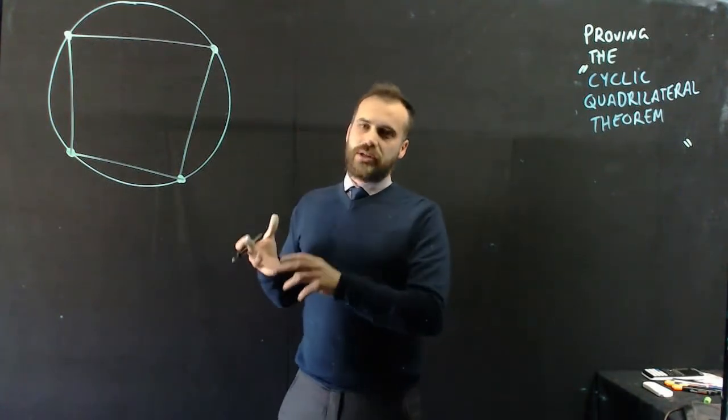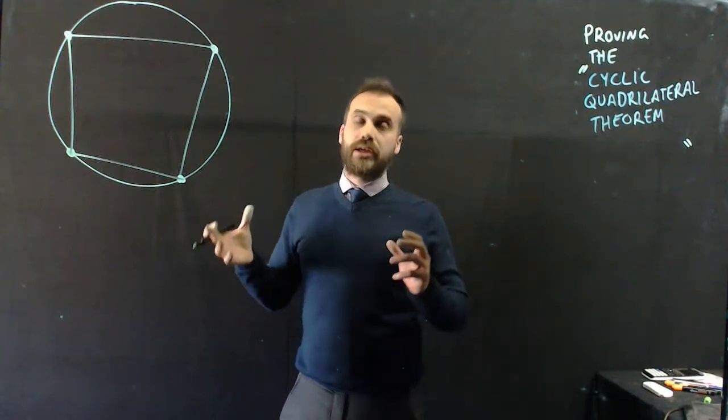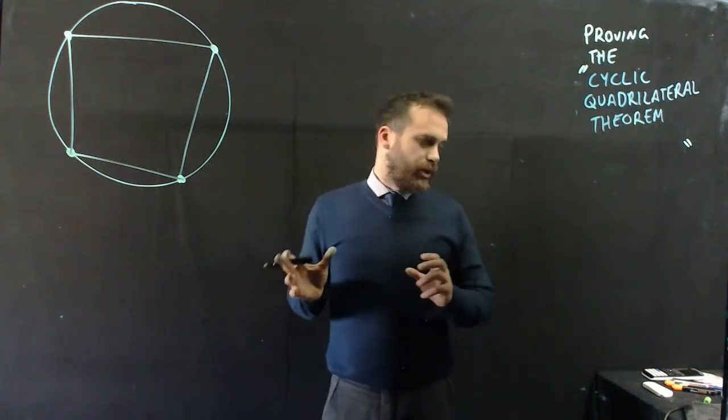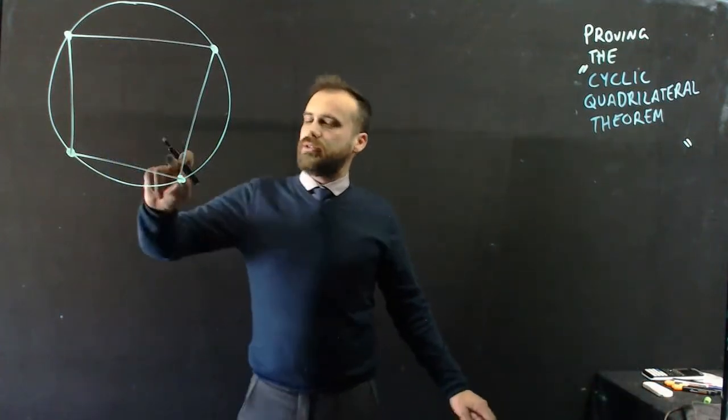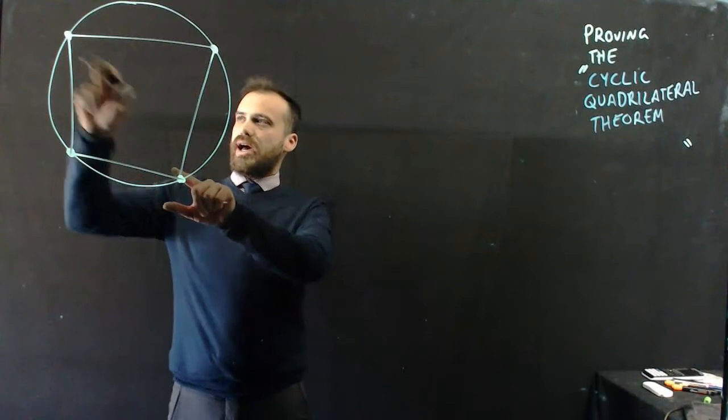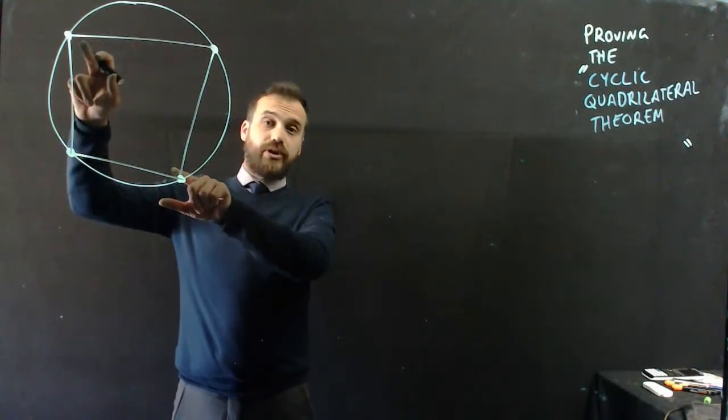What special thing happens with cyclic quadrilateral? Well, here's what the theorem states. The opposite angles are supplementary. So this angle is going to add to this angle to make 180.